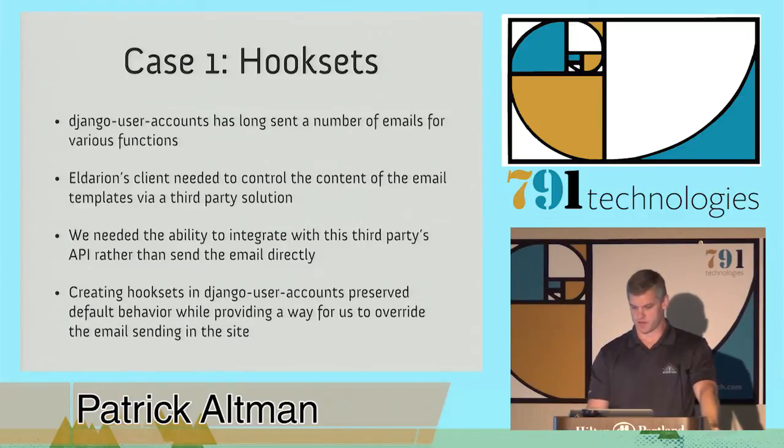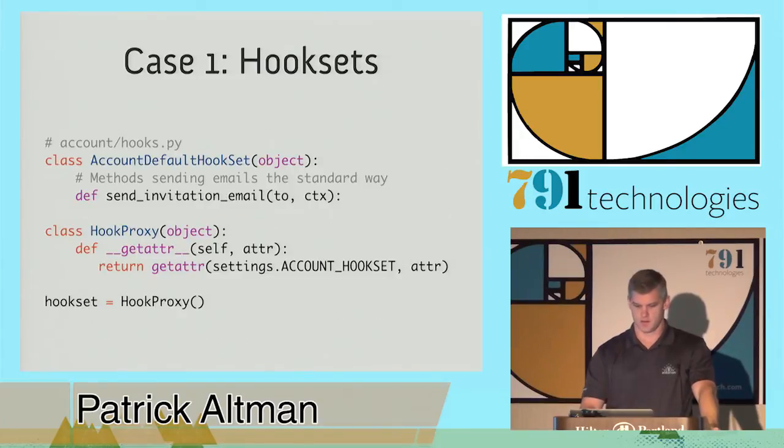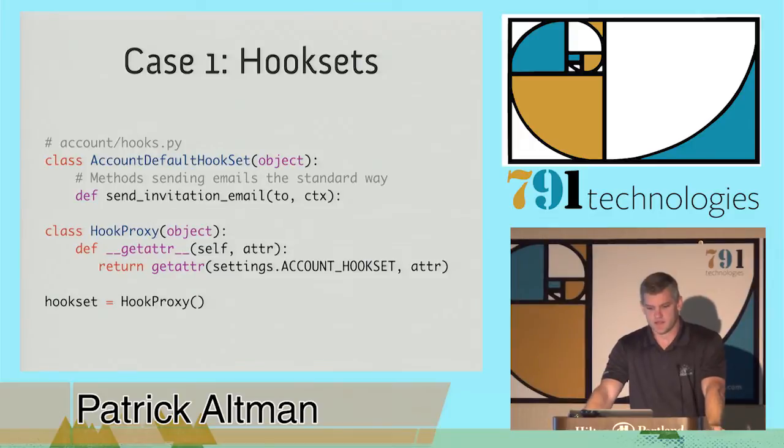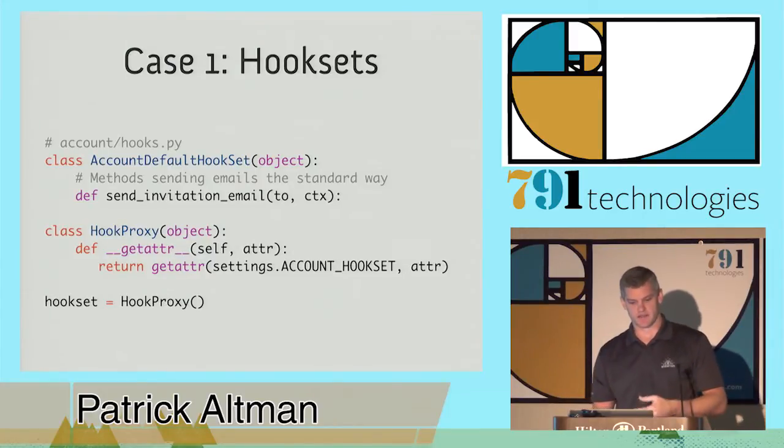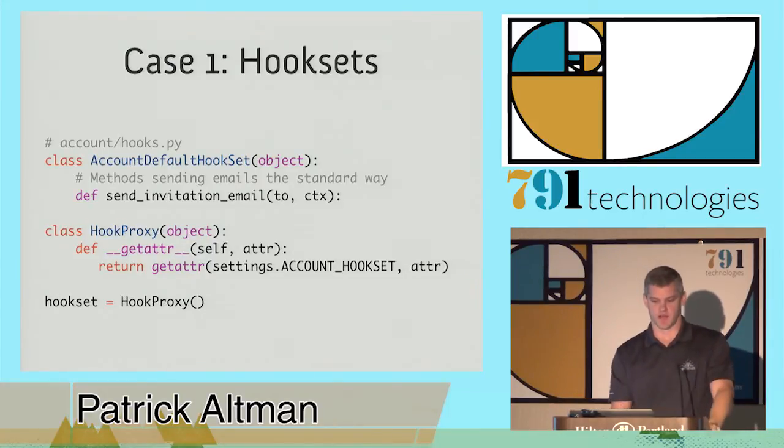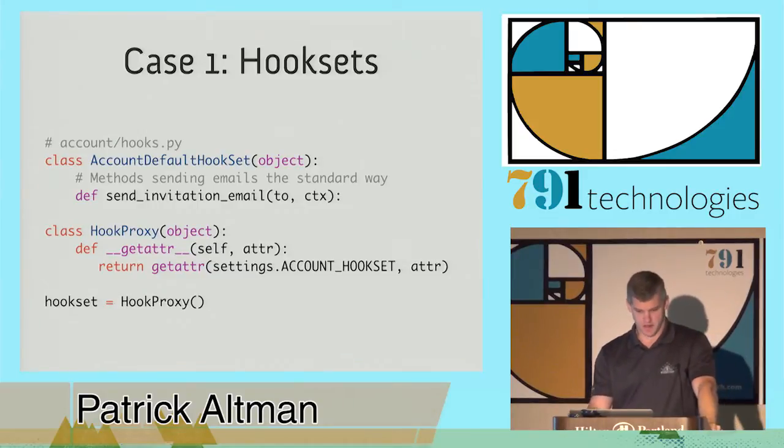So let's take a look at some code. The default hook set implementation that ships with Django user accounts basically just pulled out all of the blocks of sending email into individual methods in this class. And then we have the hook proxy. We use this hook set object, the instance of the hook set proxy, to wrap the pulling of the settings. And that setting is what allows us to override the default hook set.